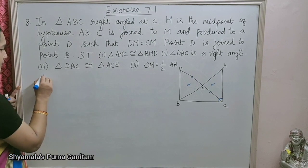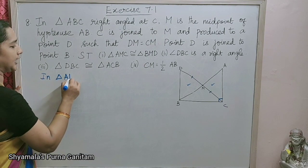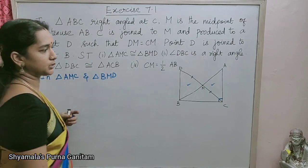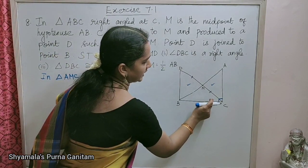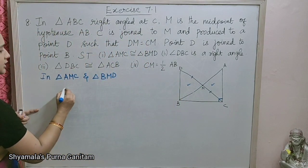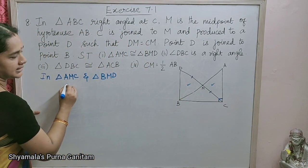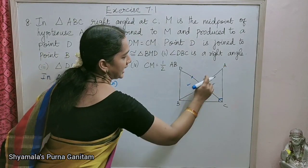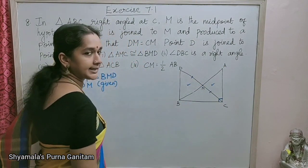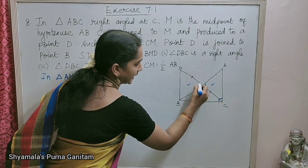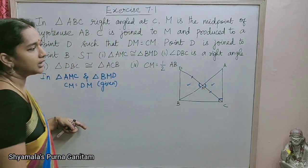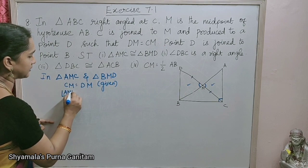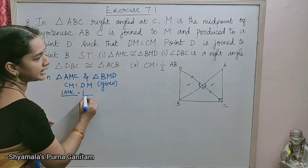In triangles AMC and BMD, it is given that CM is equal to DM. If you have two intersecting lines, these two angles will be vertically opposite angles. So angle AMC is equal to angle BMD — vertically opposite angles.